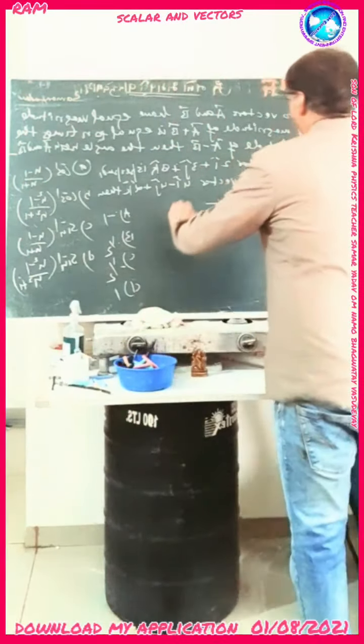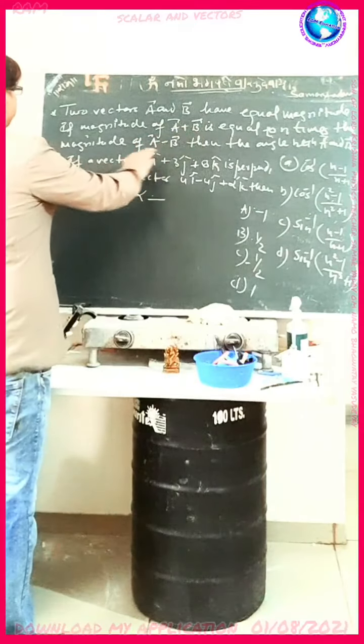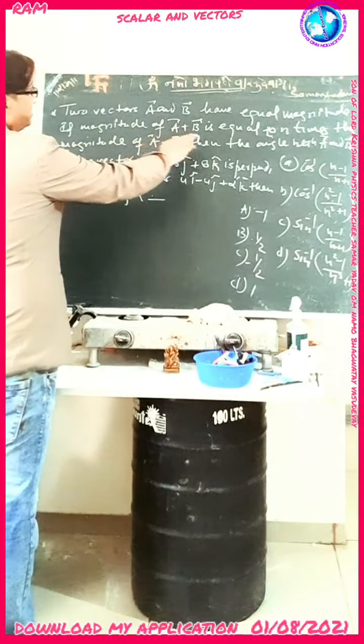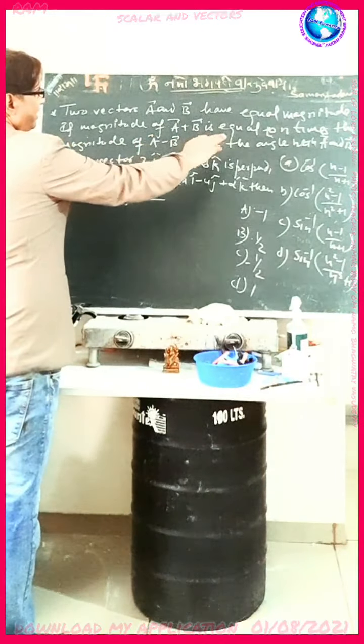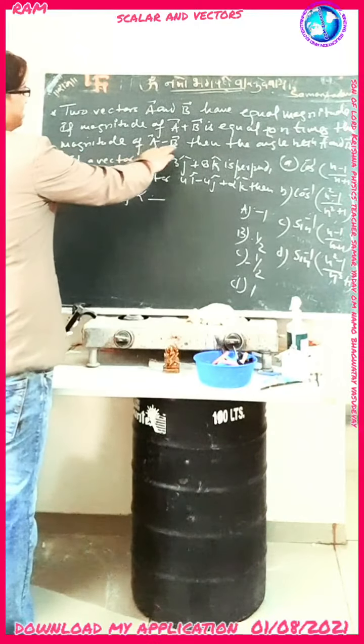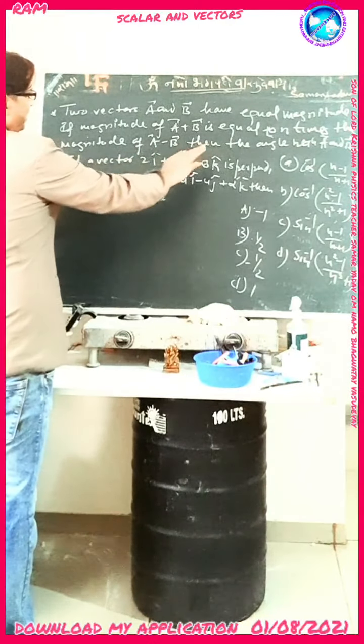Two vectors A and B have equal magnitude. If the magnitude of A plus B is equal to 10 times the magnitude of A minus B, then find the magnitude of A minus B.